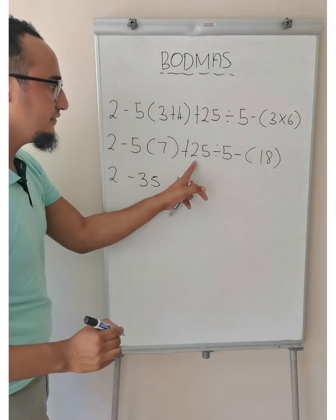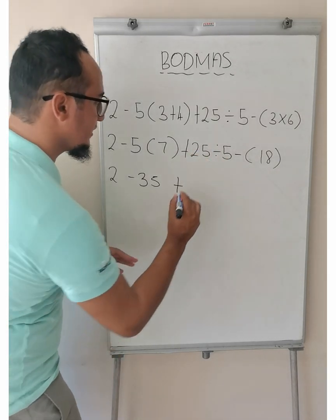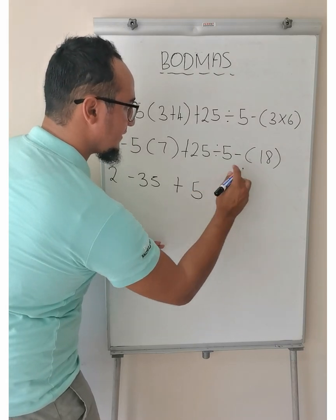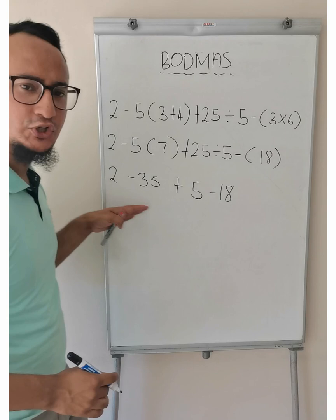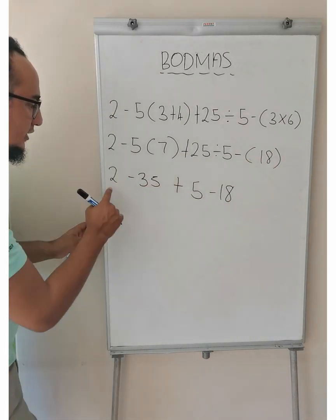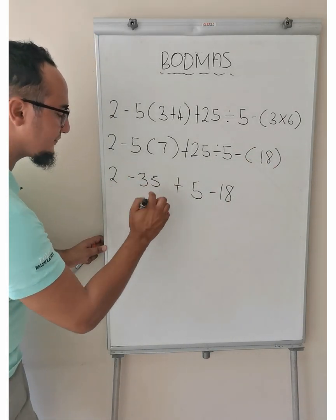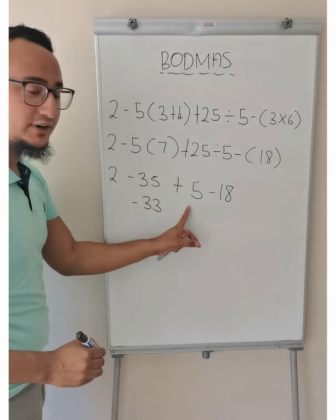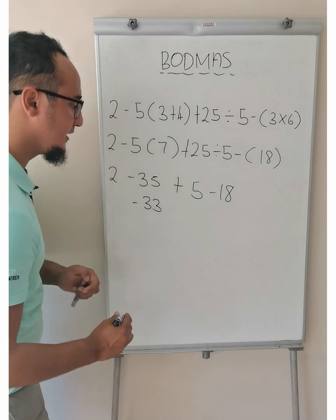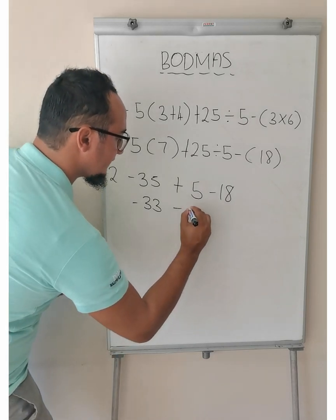Right. Plus 25 divided by 5 is equal to 5 and that is minus 18. From there, you can get your answer immediately or you can even go further.